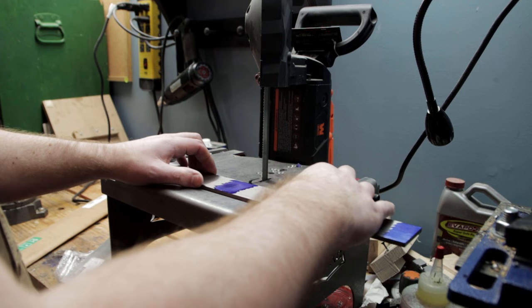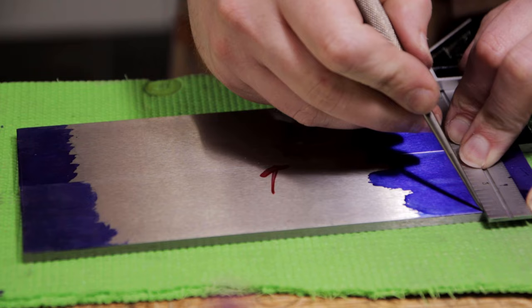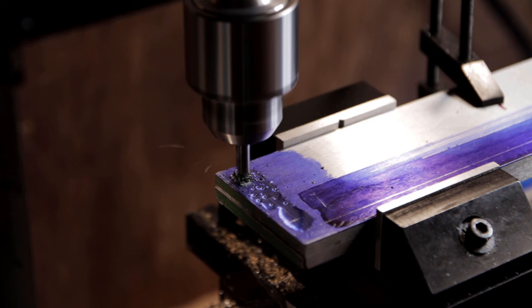So I'm starting with some O1 tool steel. This stuff comes pre-ground which is great for my purposes. It means there's less work getting it flat and square. Here I'm just laying out for the upcoming joinery work I need to do.